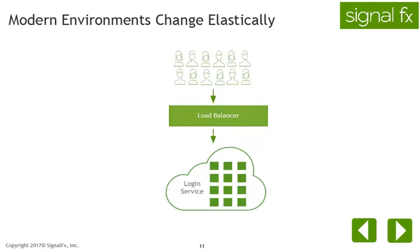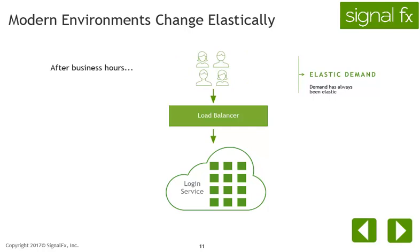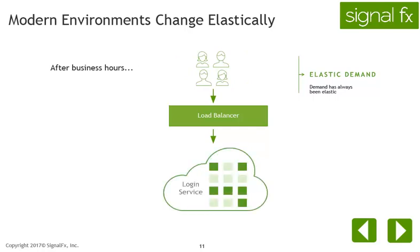During business hours, the number of users may not vary as much. However, after business hours, the number of users in North America drops down significantly. You don't need that many machines now as demand drops. With modern applications, hardware is available on demand, so infrastructure will scale up or down depending on demand. We now have elastic capacity to meet the needs of elastic demand.